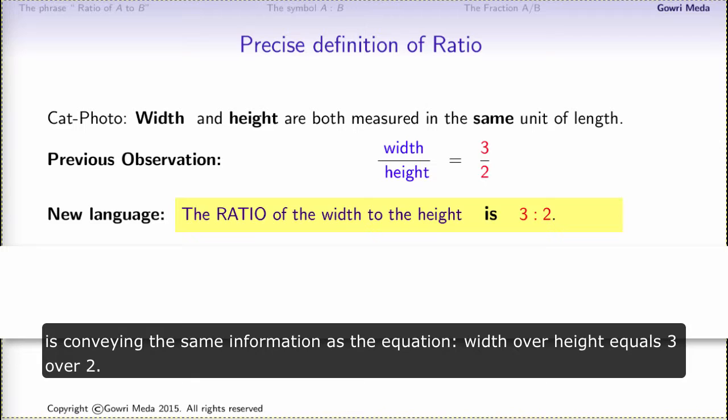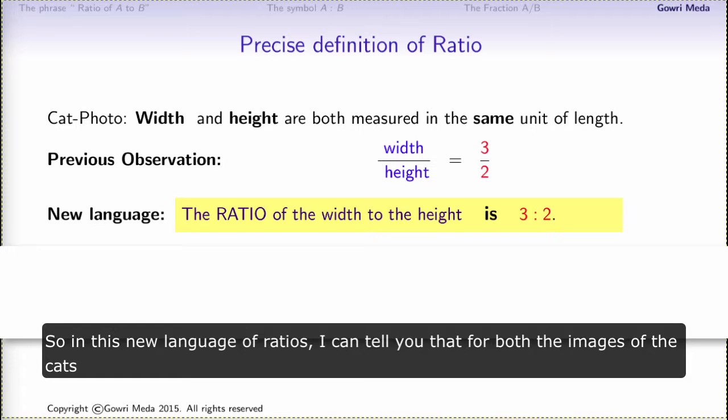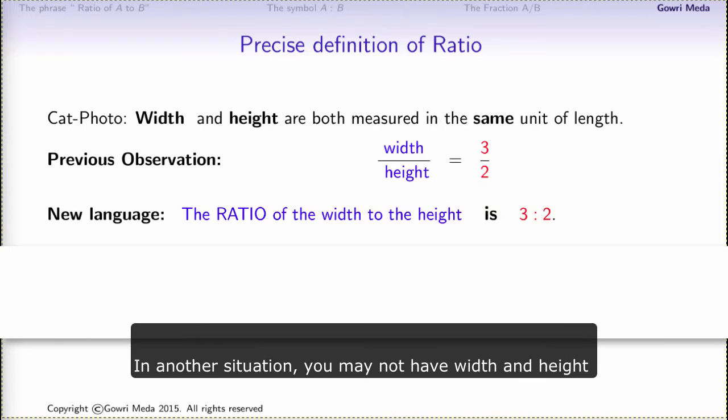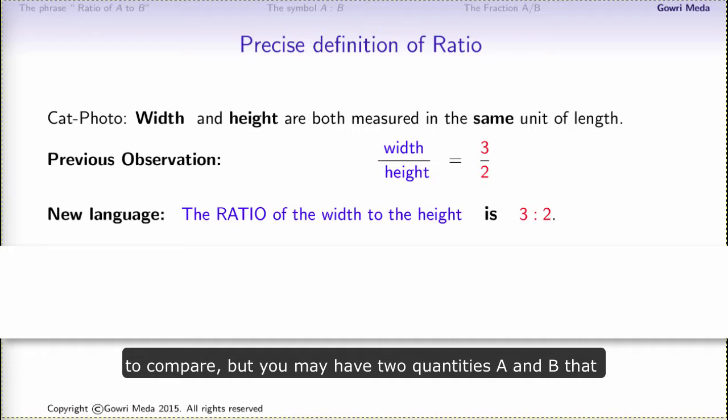So in this new language of ratios, I can tell you that for both the images of the cats that you saw, the ratio of the width to its height is 3 to 2. In another situation, you may not have width and height to compare, but you may have two quantities A and B that you want to compare by looking at the fraction A over B. In other words, you may want to talk about the ratio of A to B.